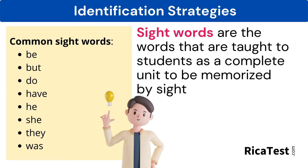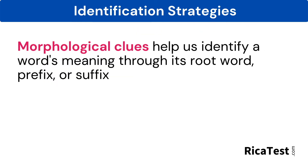Sight words are the words that are taught to students as a complete unit to be memorized by sight. Common sight words include be, but, do, have, he, she, they, and was.